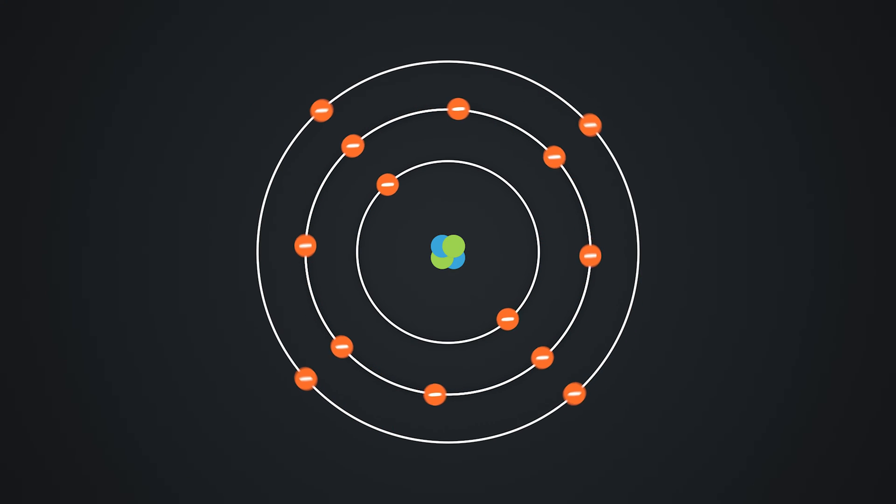Using the Bohr model, we can visualize that an atom has a central nucleus consisting of protons and neutrons that is surrounded by orbiting electrons.